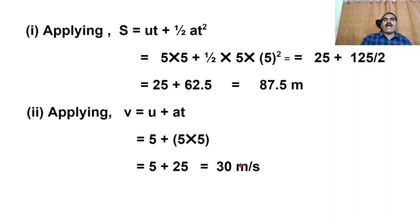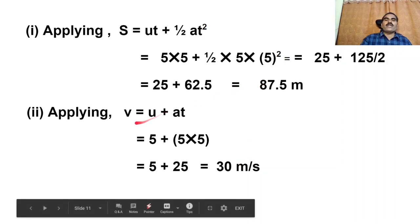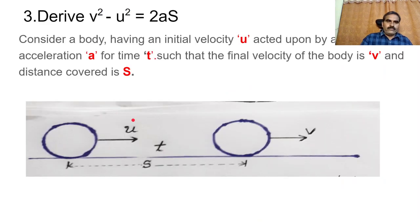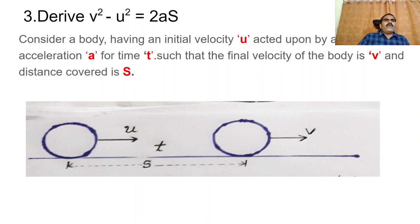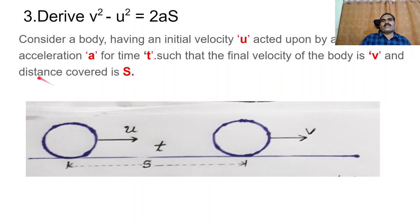In this way, you may calculate the distance travelled by the body and also the final velocity. In our topic, we have another equation: V square minus U square equals 2AS.